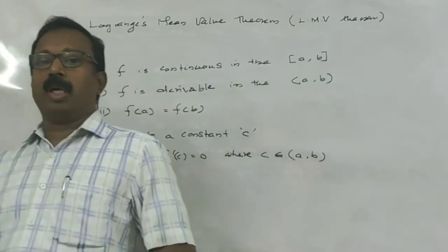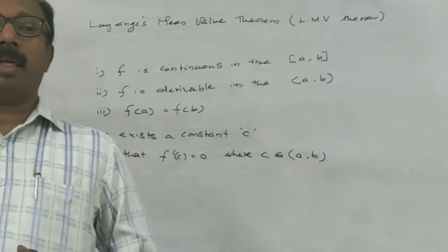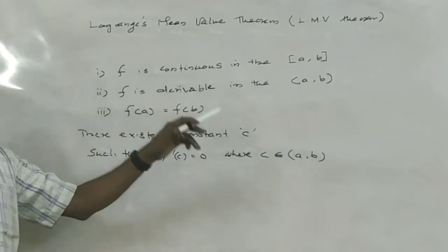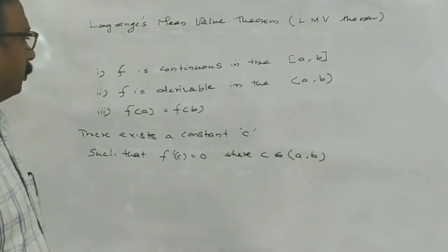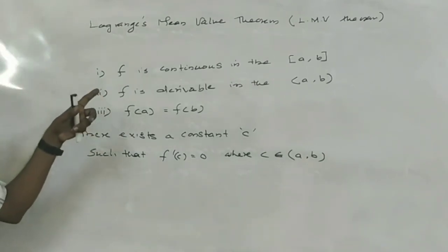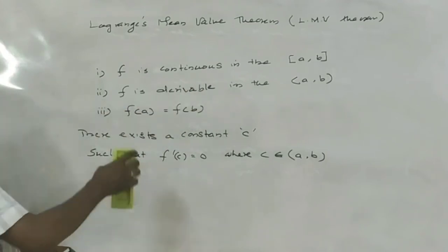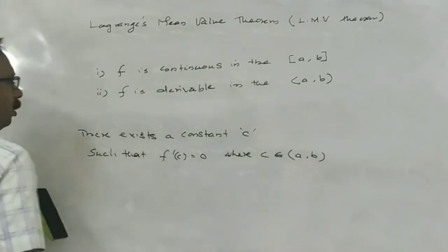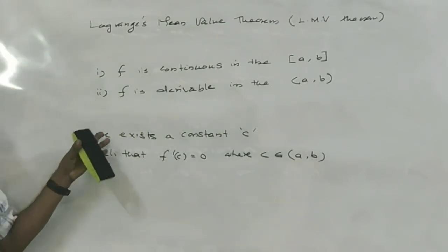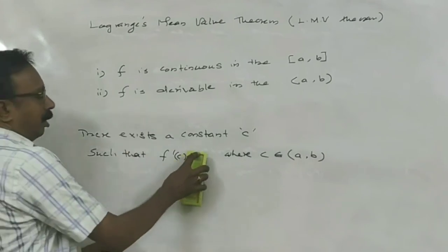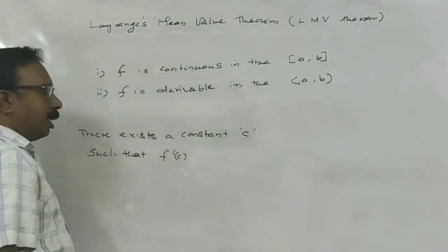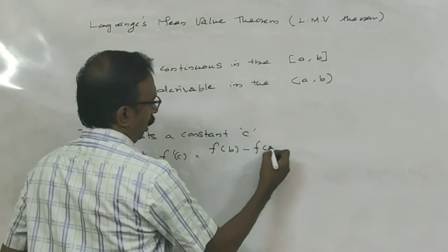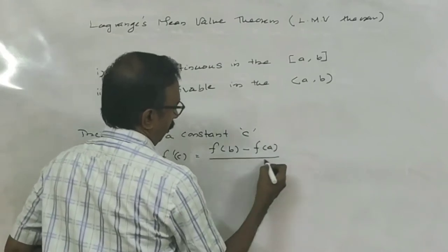In Lagrange's mean value theorem, if there is a function defined in the closed interval A to B, then the first condition is it is continuous in the closed interval A to B, and the second condition is it is derivable in the open interval A to B. We need only these two conditions. Then there exists a constant C such that F dash C is equal to F of B minus F of A divided by B minus A.